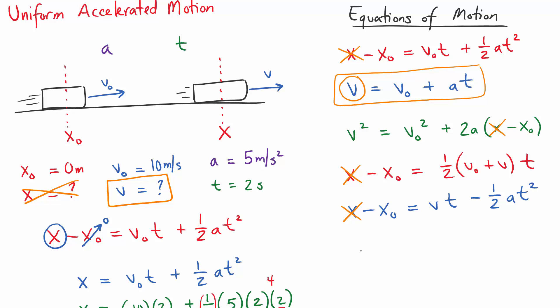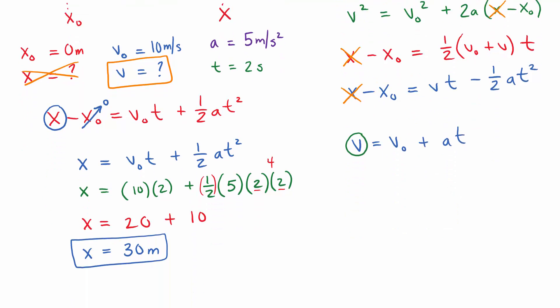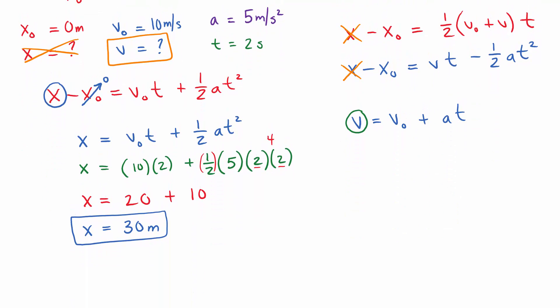So go ahead and write that equation down here. V equals V naught plus AT. In this case, we are trying to find the final velocity. So we're going to go ahead here. Take all the values that we've written down. Substitute them in. And find the final velocity. The initial velocity was 10. The acceleration was 5. And the time was 2. So I have to do the math here. We're going to have 10 plus 5 times 2, which is 10. There we have it. The final velocity is 20 meters per second.